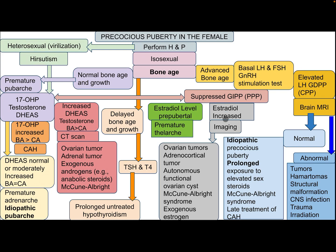If estradiol is elevated, the patient needs imaging studies. Differential diagnosis includes ovarian tumor, adrenocortical tumor, autonomous functional ovarian cyst, McCune-Albright syndrome, or exogenous estrogen. If bone age is delayed with delayed growth, the patient needs TSH and T4. This finding indicates prolonged untreated hypothyroidism, which is the only cause of delayed bone age in this context.